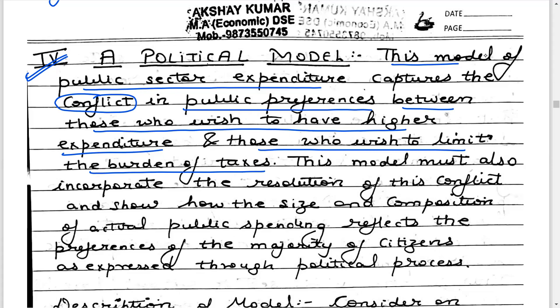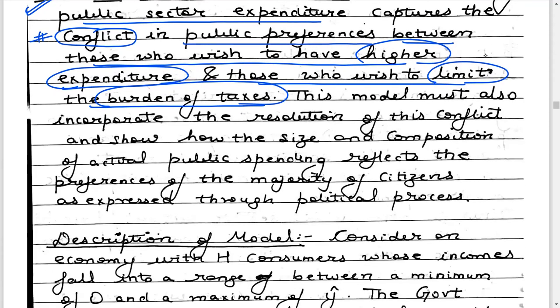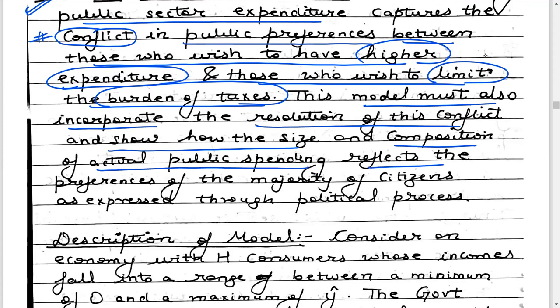If you want the public sector to do more expenditure, you need to pay higher taxes. There is a conflict in public preferences because some people wish to have higher expenditure but at the same time wish to limit the burden of taxes. The political model will tell us what should be the desired level of public sector expenditure, and show how the size and composition of actual public spending reflect the preferences of the majority of citizens as expressed through the political process.